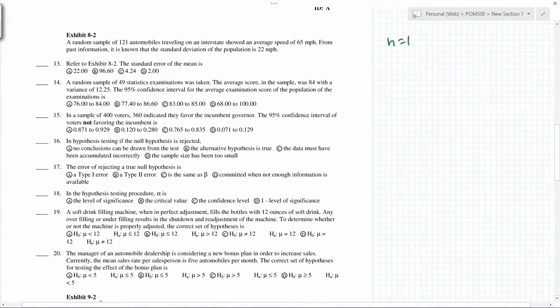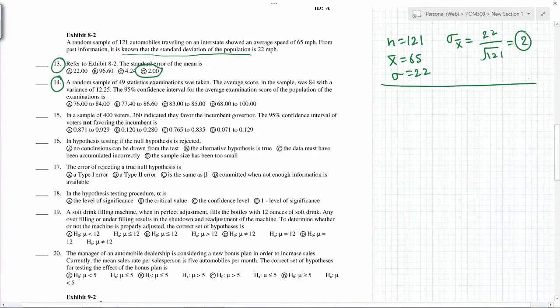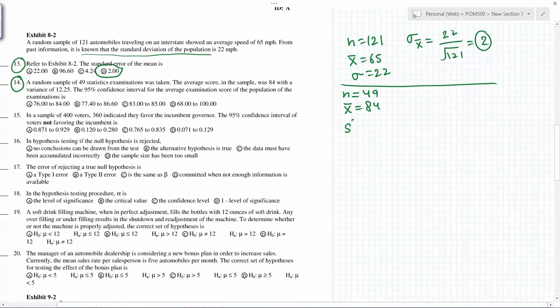n equals 121, X bar equals 65, and sigma - this is known standard deviation of the population - sigma equals 22. Now standard error, so sigma of X bar will be 22 divided by square root of 121, which is 11, so you get 2.